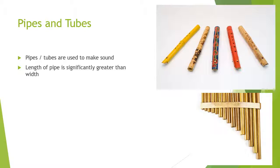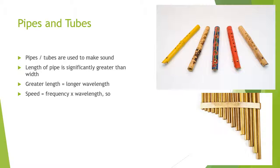In a pan flute, there are a bunch of lengths. You blow across it and it makes many different sounds. The longest one is the lowest and the shortest one is the highest. The greater length corresponds to a longer wavelength. Since speed equals frequency times wavelength, and the speed of sound in air is the same for all of them, a longer wavelength means a lower frequency — that's why the longer pipes have a lower pitch.